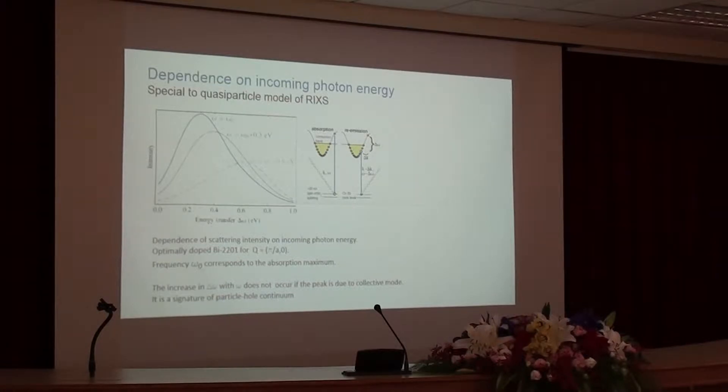Whereas in this case, when we think about this dynamical process, depending on the incoming photon energy, you photo excite electrons to different states. So the phase space available for scattering changes. And that's how the signal changes.